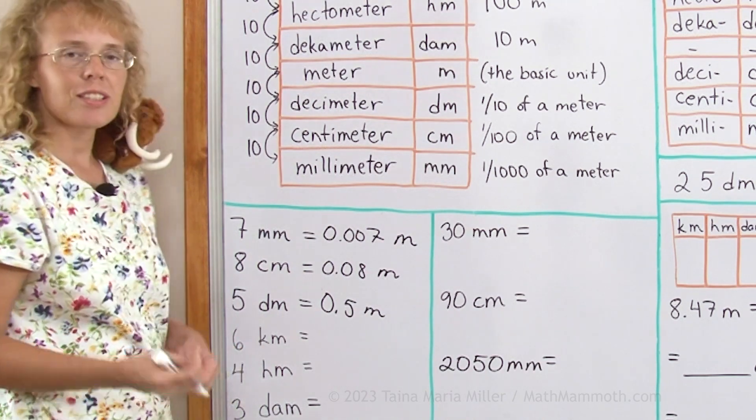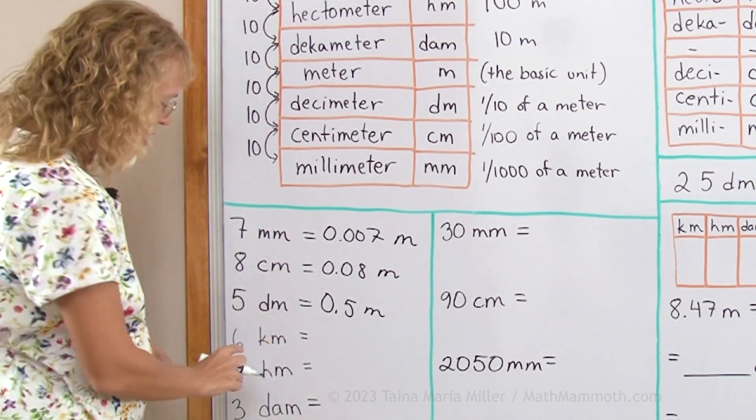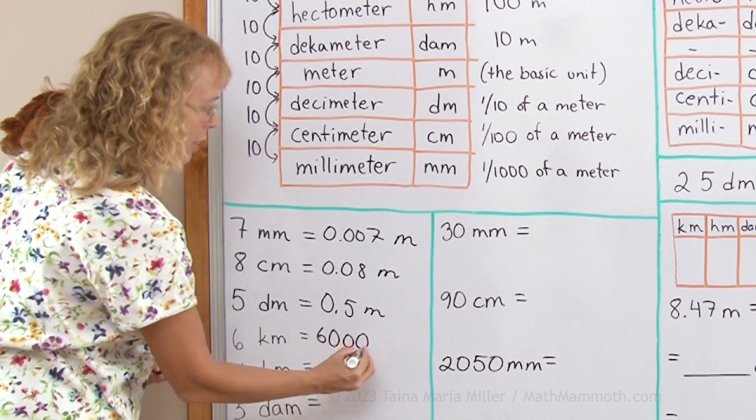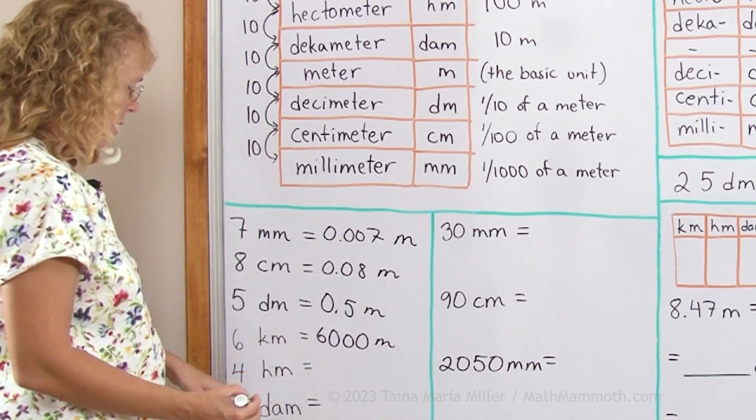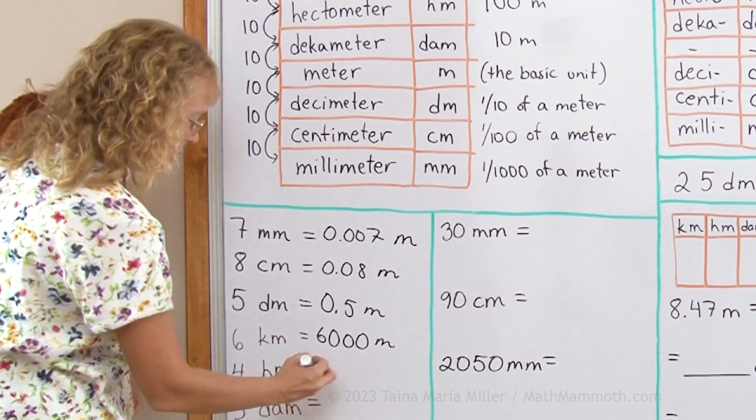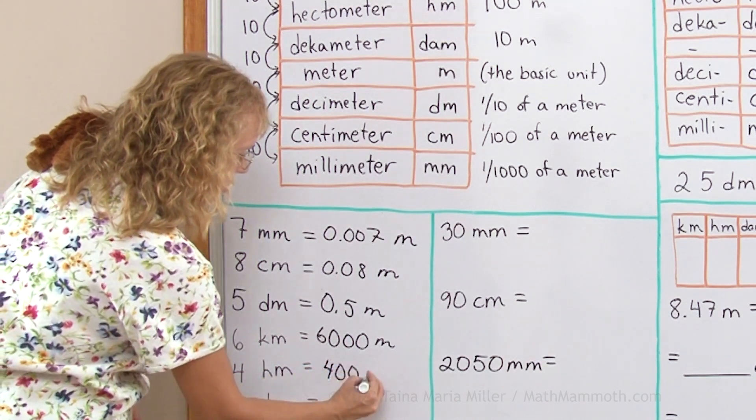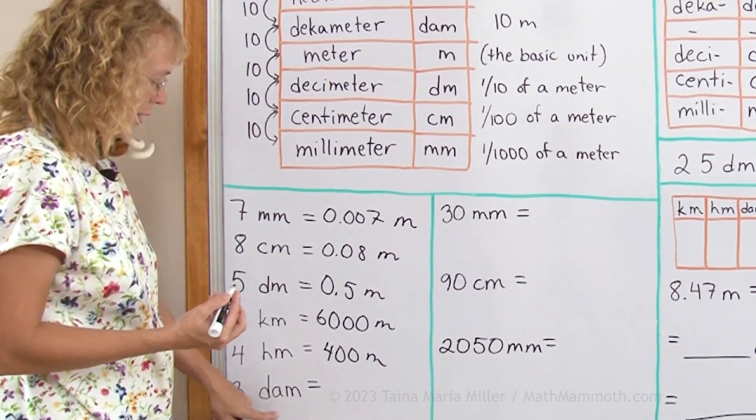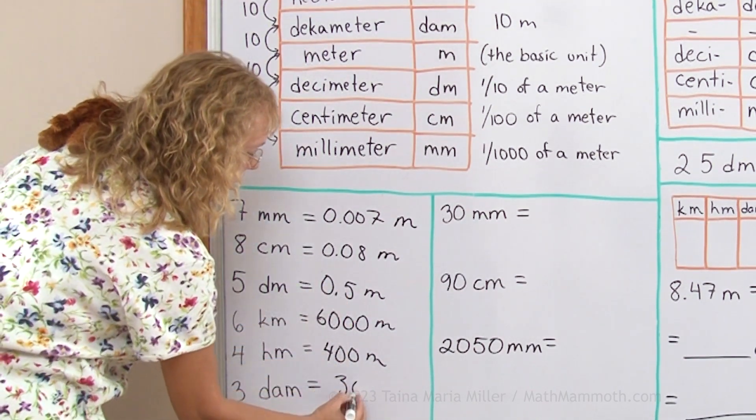Six kilometers. Kilo meaning thousand, so here we have six-thousand, 6000 meters. Four hectometers. Hecto meaning hundred, so I have four-hundred meters. And then deca here meaning ten, three deca, thirty meters.